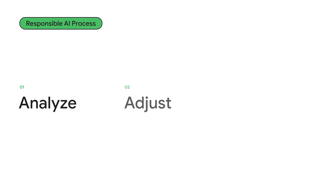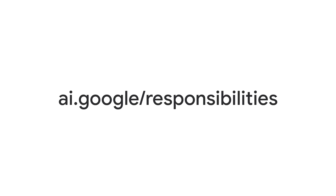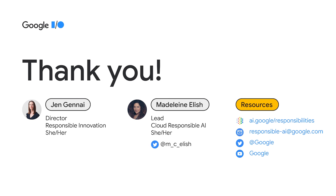To recap: you can use the responsible AI process from the very first ideation stages of developing an AI application, and you can also use it again to review what you've built. Analyze your data, adjust your model as you test for potential unintended consequences and identify opportunities for improvement, and integrate smart practices, diverse perspectives, and responsible AI tools into your product before launch. We hope you feel equipped to start your responsible AI developer journey today. Learn more at ai.google.com/responsibilities. Thank you all for joining — enjoy the rest of your I/O experience.